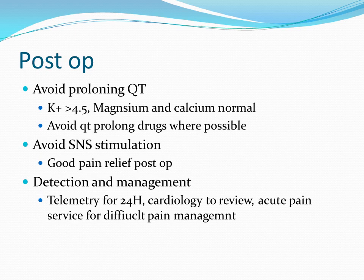Post-operatively, I would avoid prolonging QT by ensuring potassium, magnesium, and calcium were normal, and avoid QT-prolonging drugs. I would avoid increased sympathetic stimulation by ensuring good pain relief post-op, using a PCA morphine with an increased bolus dose of 2 milligrams. In terms of detection and management, I would have telemetry for 24 hours, have cardiology review the patient, and involve the acute pain service for difficult pain management and to consider conversion of methadone to another opioid.